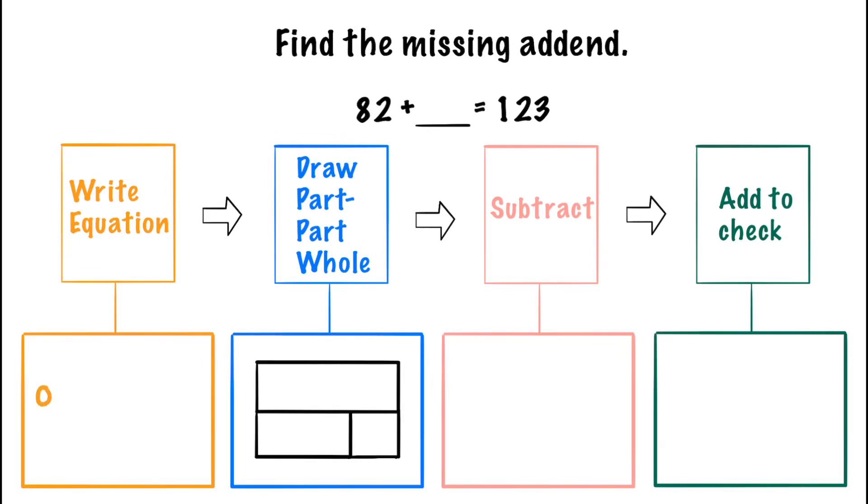Step one says to write the equation. So we're simply going to write 82 plus blank equals 123.